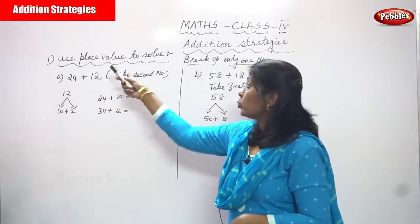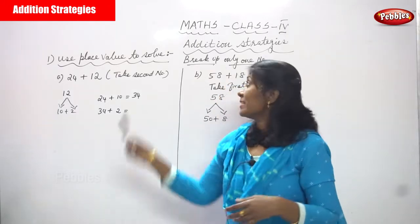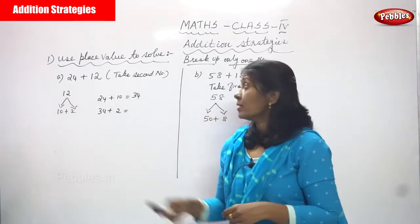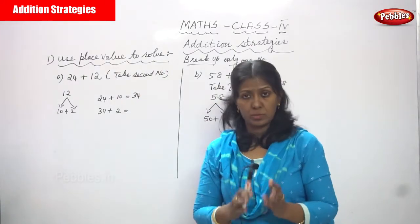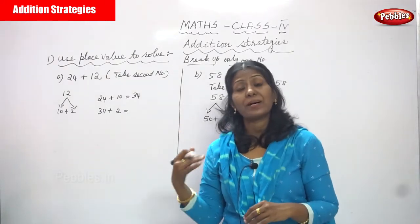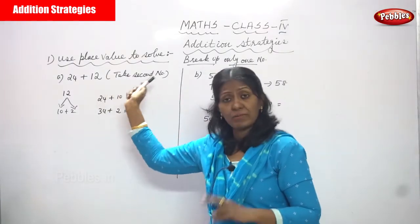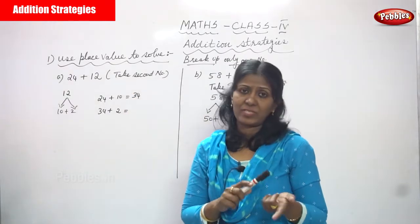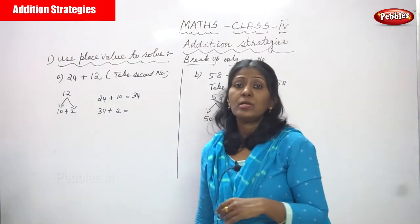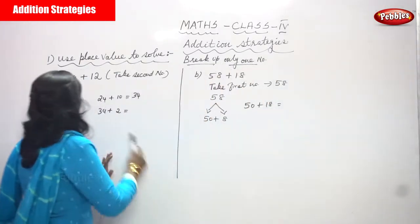Now we are going to see an addition strategy: use place value to solve and break up only one number. We have to solve the question according to the place value, but we take only one number — either the first or the second number — and use its place value to solve the problem.